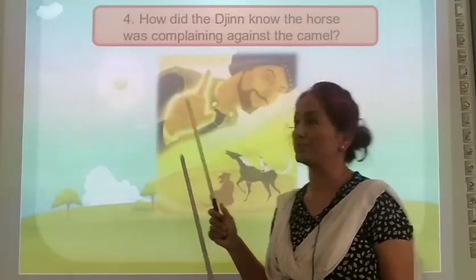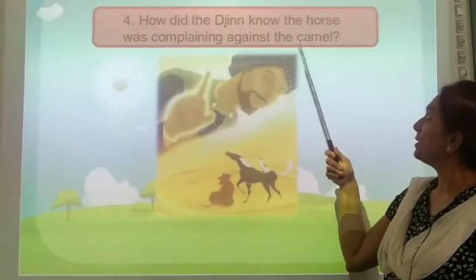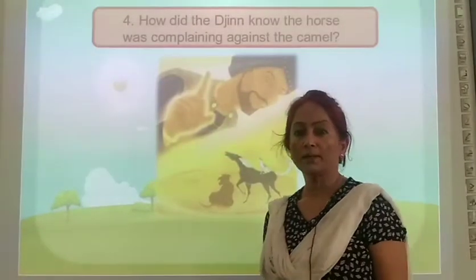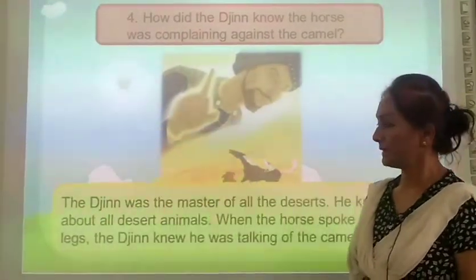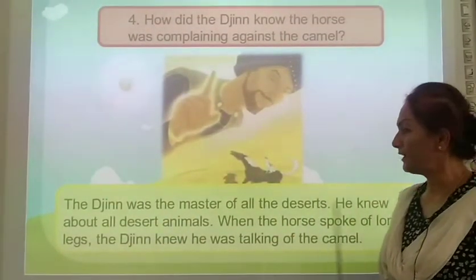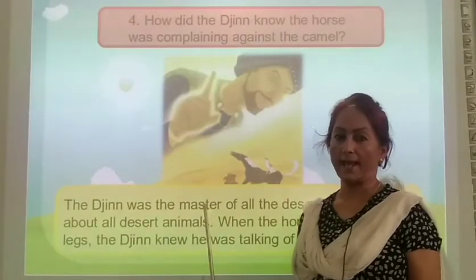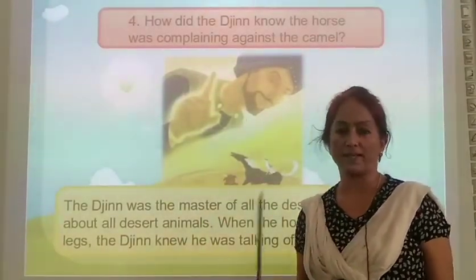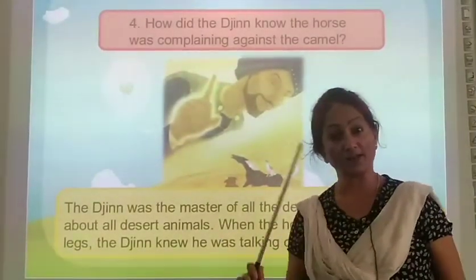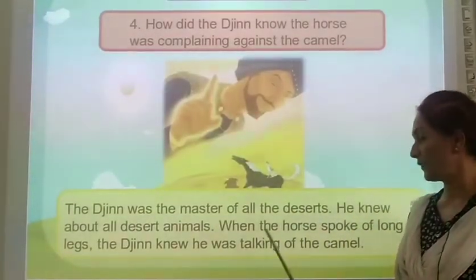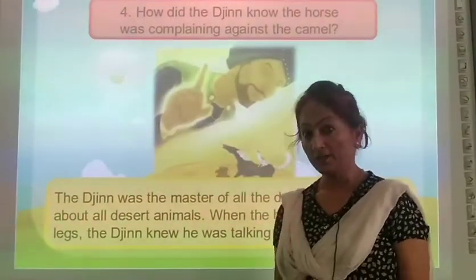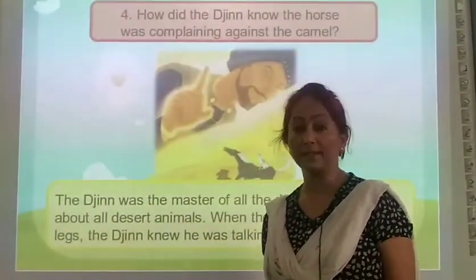How did the jinn know the horse was complaining against the camel? The jinn was the master of all the deserts and knew about all desert animals. When the horse spoke of long legs, the jinn at once understood he was talking of the camel, because he knew what was happening in the desert.